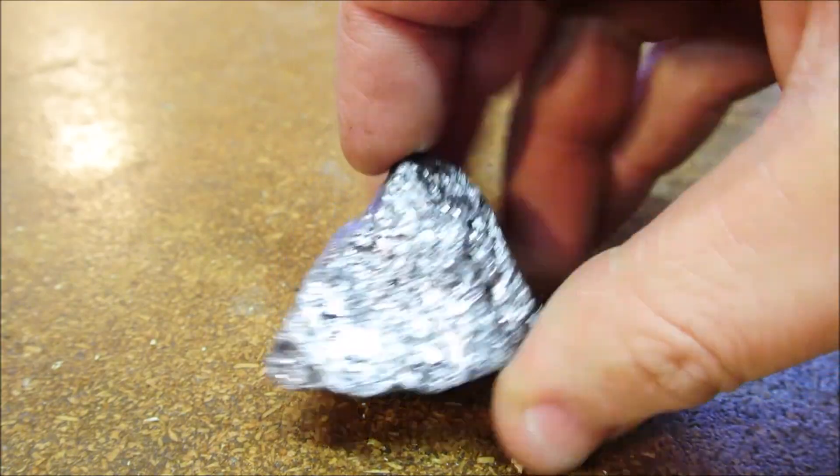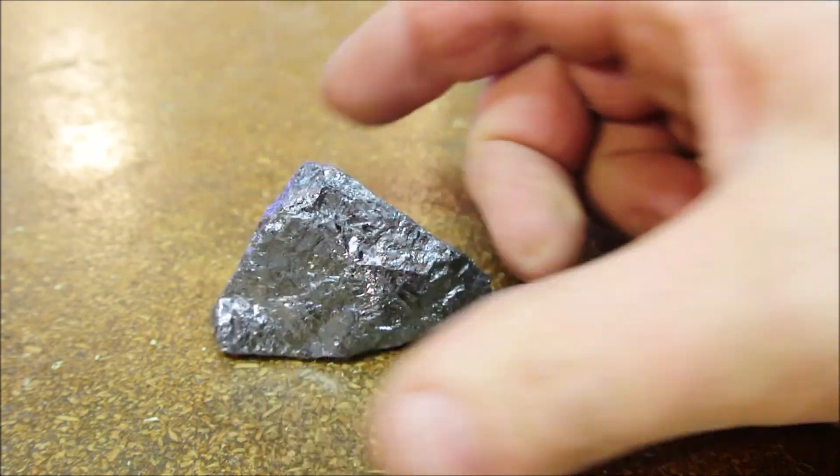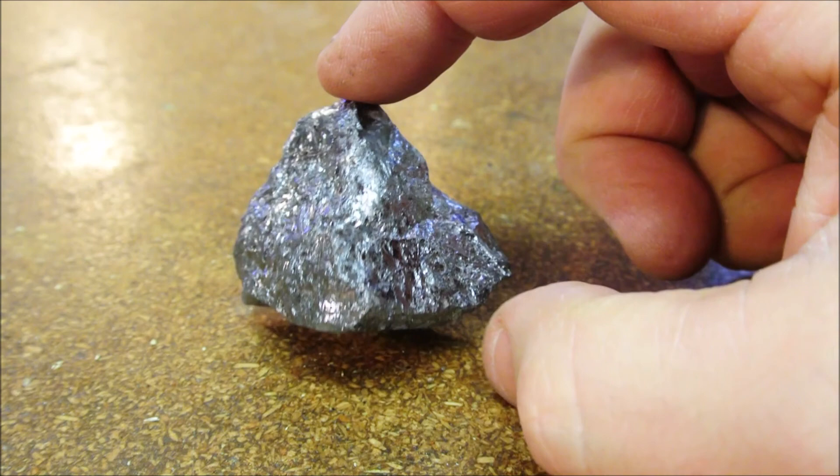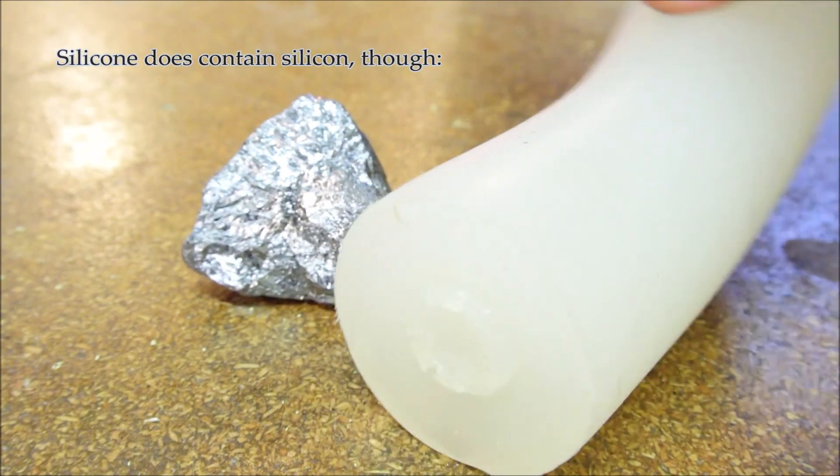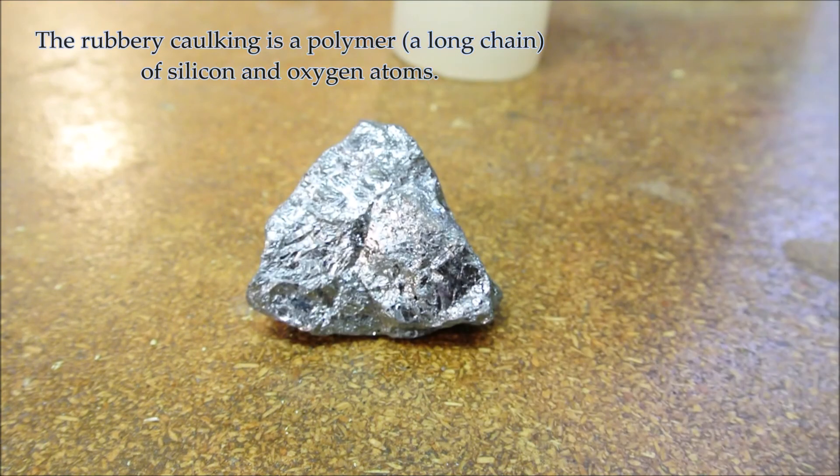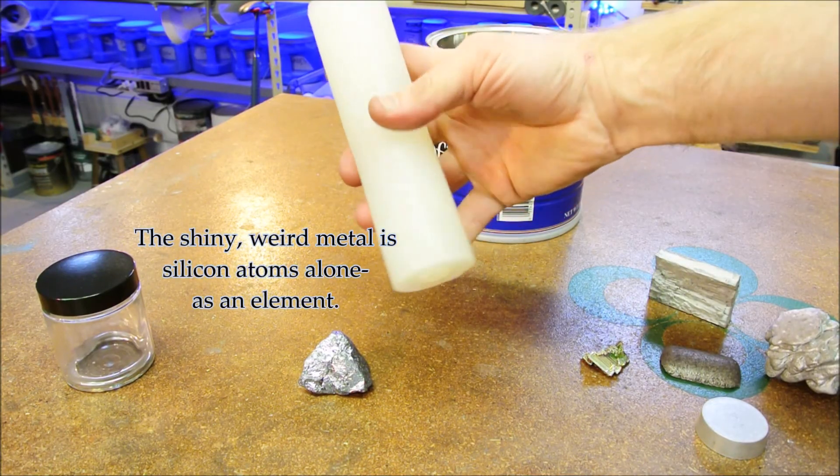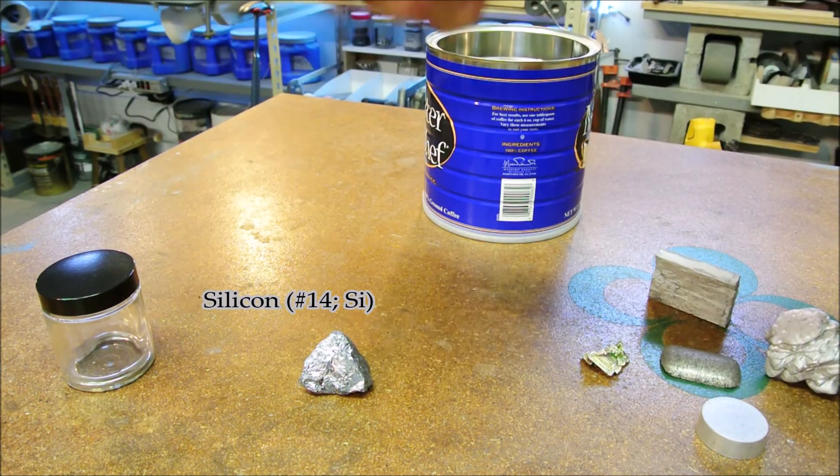This one is comparatively lightweight. Have any idea what it is? This is silicon, not silicone like this. Silicon. Yeah, that's what happens to a tube of caulking that sits for too long. Use it or lose it.